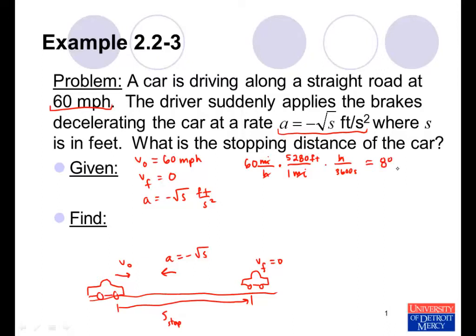If we do that calculation, we get that the initial velocity is 88 feet per second. So that's what's given. We're attempting to find the stopping distance. We'll go ahead and say that our initial position is 0, and our final position is what we want to find. We want to find the position at the end, after the velocity has been brought to 0.